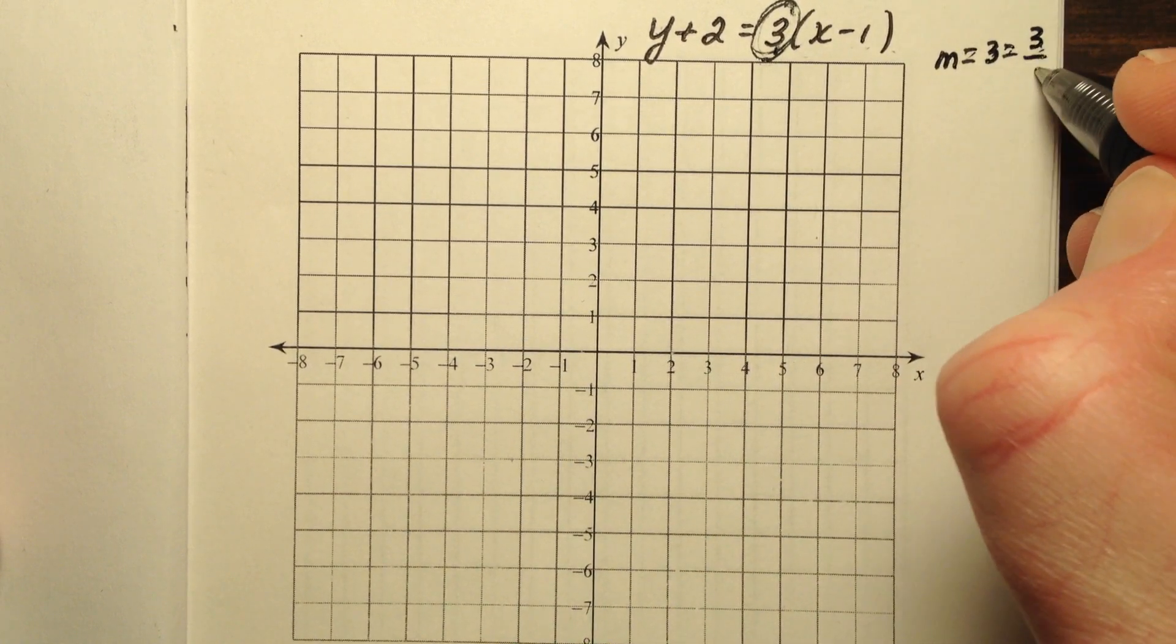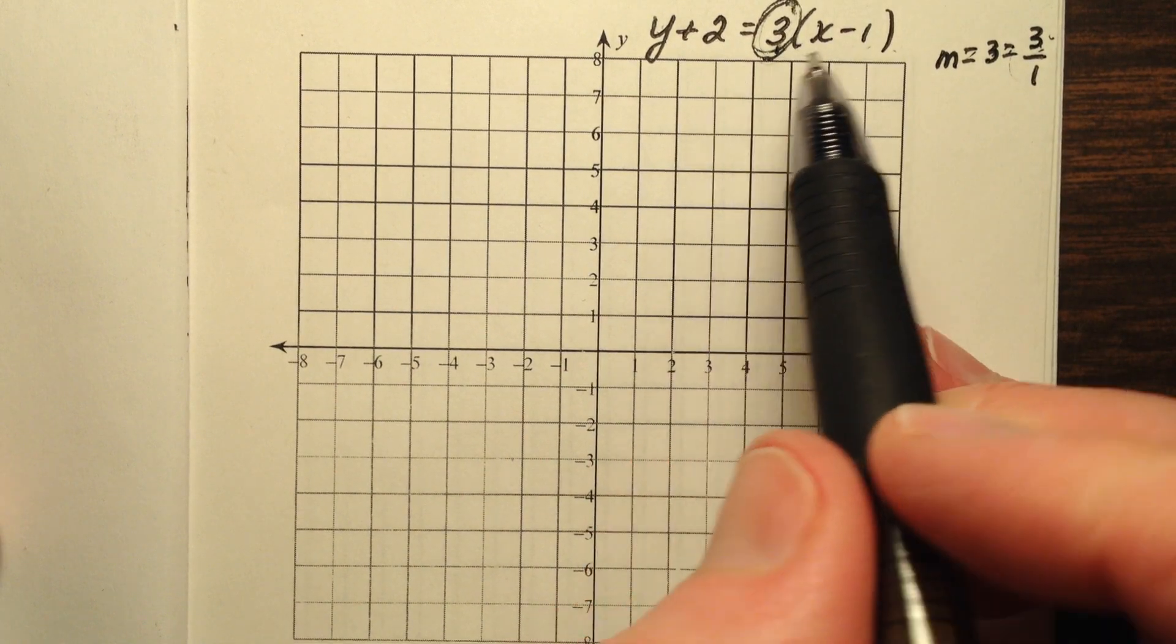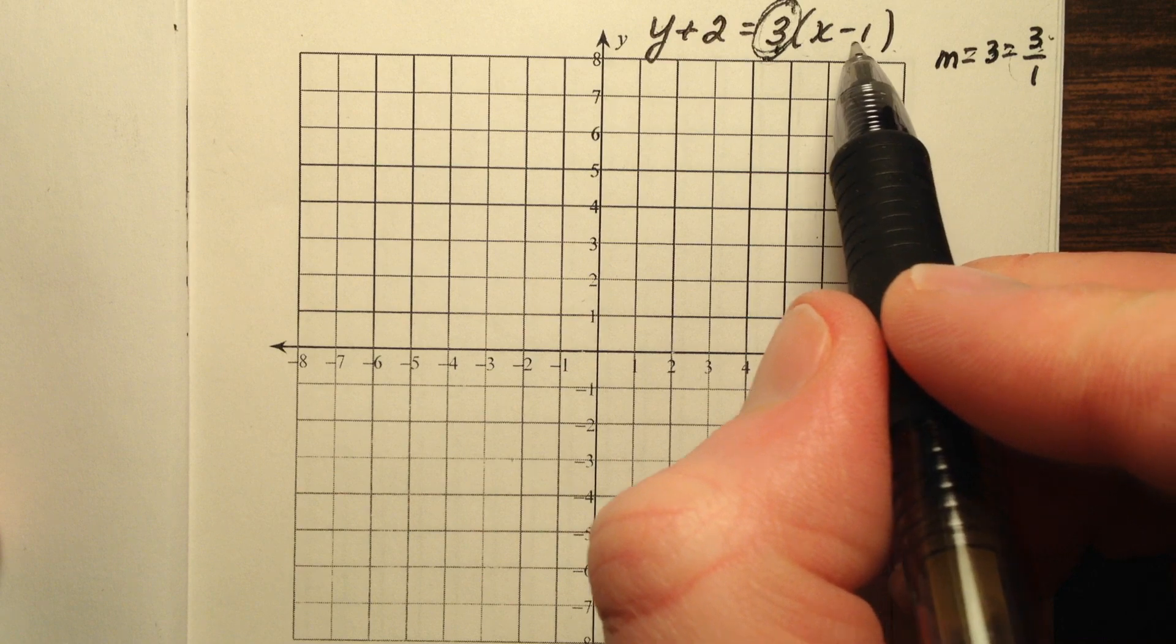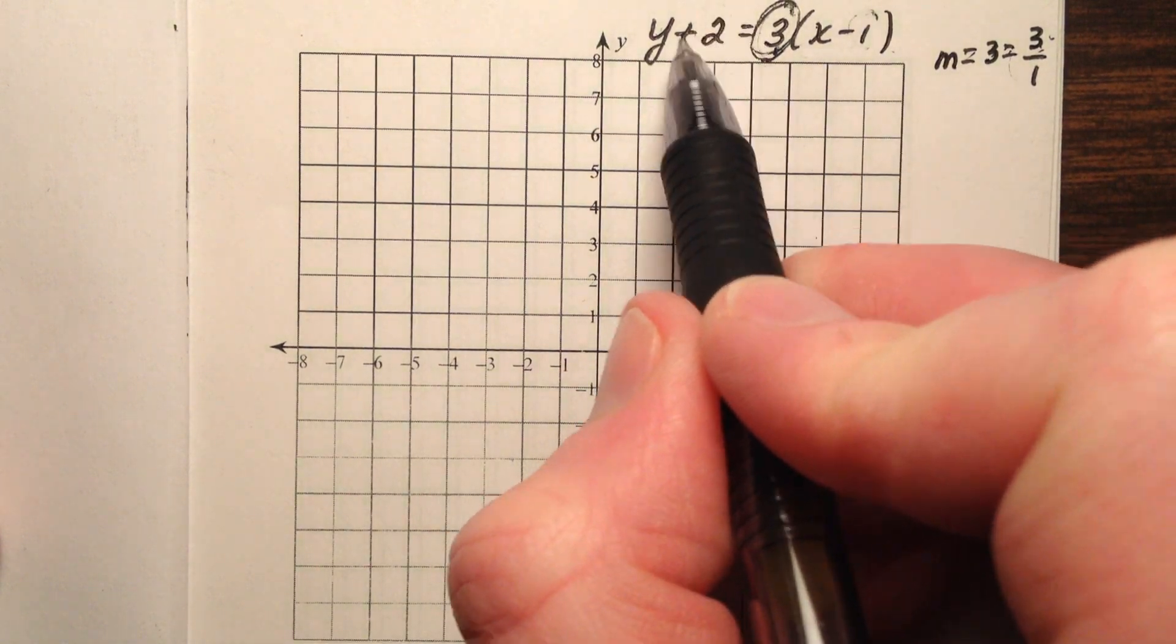In our case, 3 over 1 if you like it to be a fraction for the rise over run. And then our point that we're going to be dealing with, the x-coordinate is 1 and the y-coordinate is negative 2.